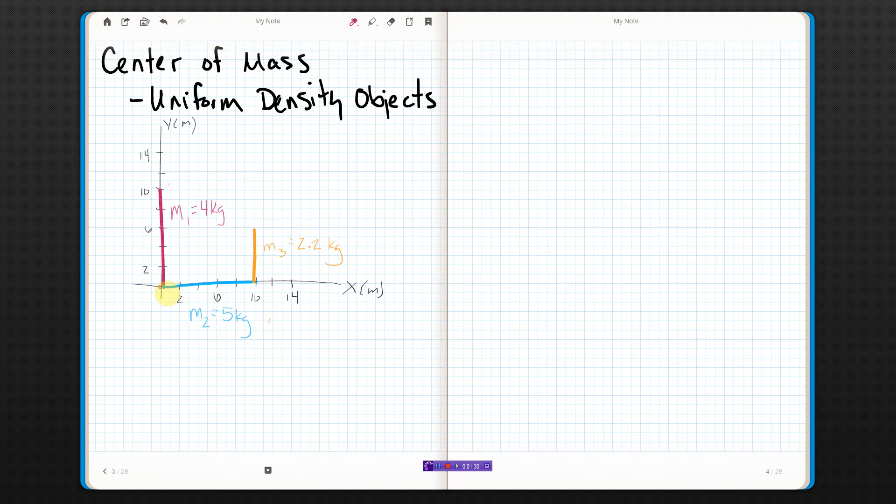If I just look at the pink part, the pink part I said was the mass was distributed evenly. So its center of mass should just be in its middle. In this case, the rod is 10 units long, 10 meters long. So the center of mass should be 5 meters at 5 meters. Right here. That is the center of mass of rod number 1. I'm going to call that center of mass number 1.